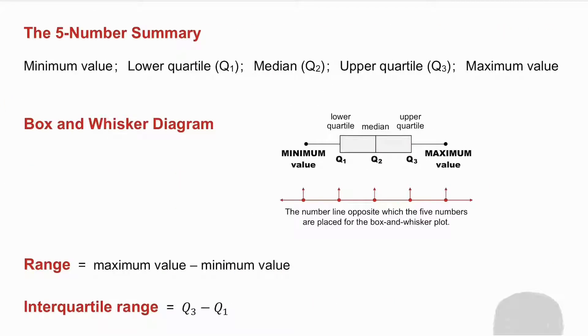The five number summary consists of the following numbers: the minimum value, the lower quartile which is Q1, the median which is Q2, the upper quartile Q3, and the maximum value. And those five numbers make up what is called the five number summary. Now it is important that those numbers are written in that order.